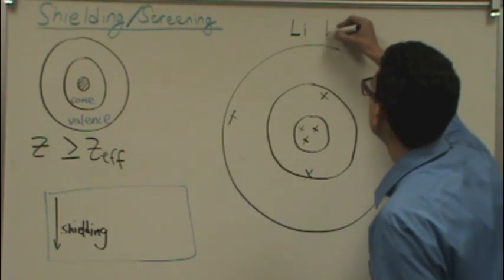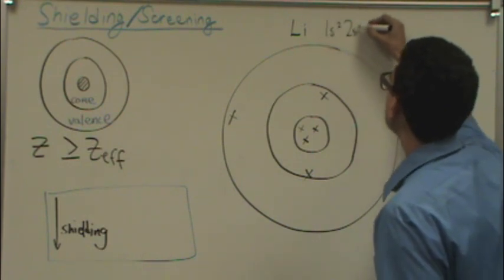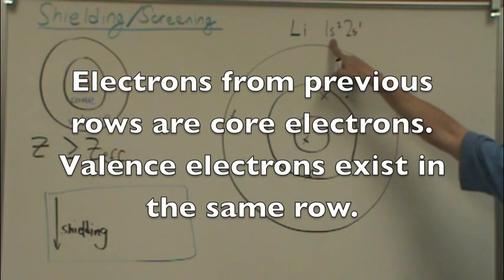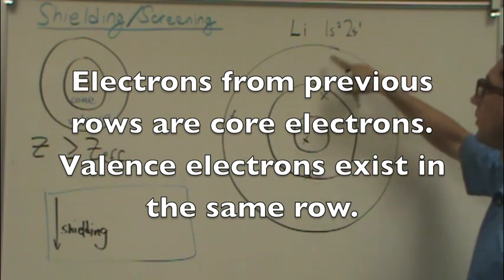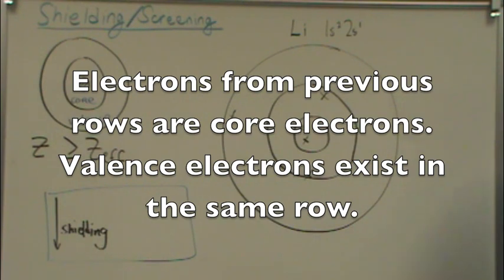Well, lithium is 1s2, 2s1. And the 1s2 comes from the previous noble gas and the previous row. And so because of that, these are the core electrons, two. And then we have one valence electron from the 2s1.